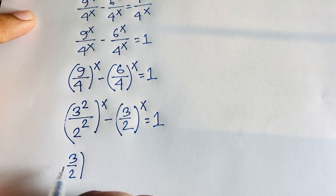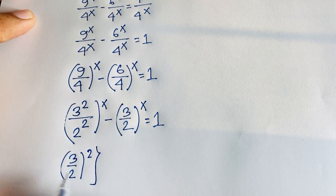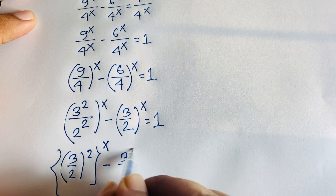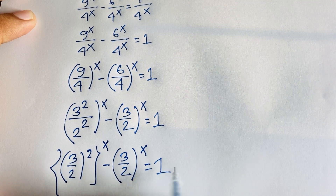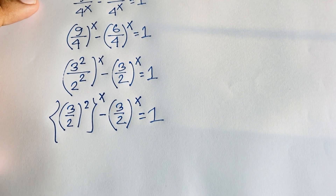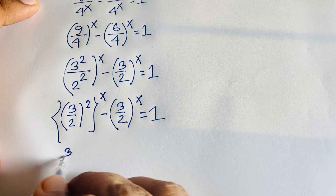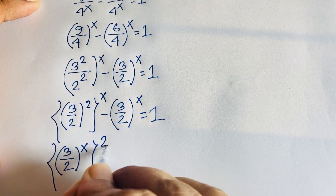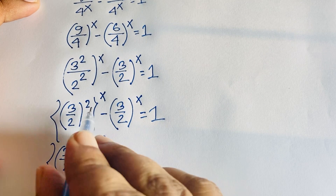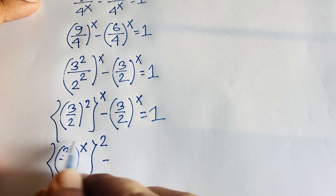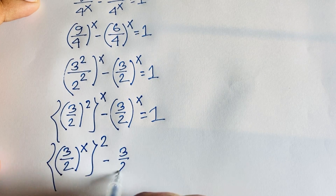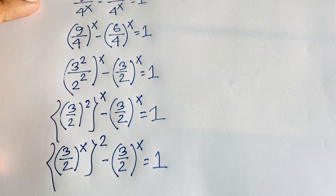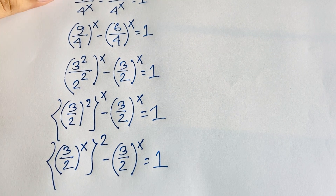Moving the exponent, (3/2)^(2x) can be written as ((3/2)^x)^2, since the exponent doubles. So the equation becomes ((3/2)^x)^2 minus (3/2)^x equals 1.